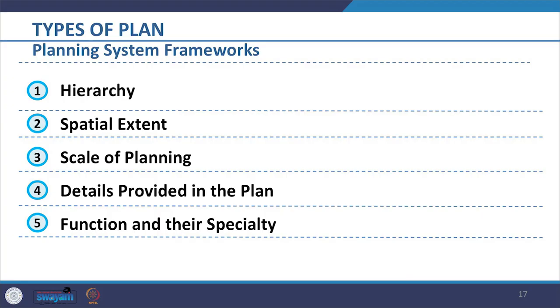The framework considers the spatial extent — how much planning area does the plan cover — and the scale of planning, whether large scale or small scale. It also includes type, which depends on the details provided in the plan: does the plan cover broader aspects with lesser details or specific aspects with extensive details? Similarly, it depends on the functions and their specialty the plan captures.